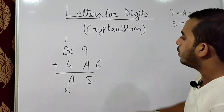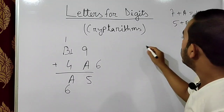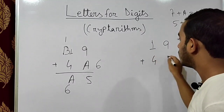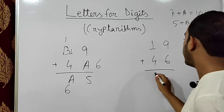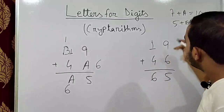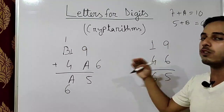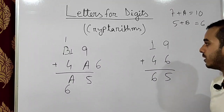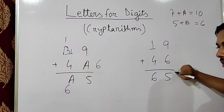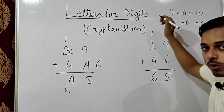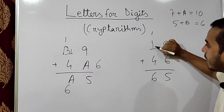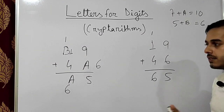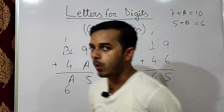Let us cross-check. If B is 1 and A is 6, then we write 19 plus 46. The result should be 65. Check: 9 plus 6 is 15, remainder 1. Then 1 plus 4 is 5, plus 1 is 6. So we get 65. This confirms the value of A is 6 and value of B is 1.